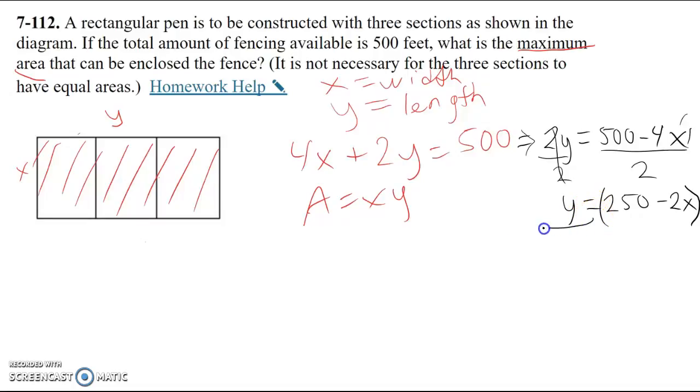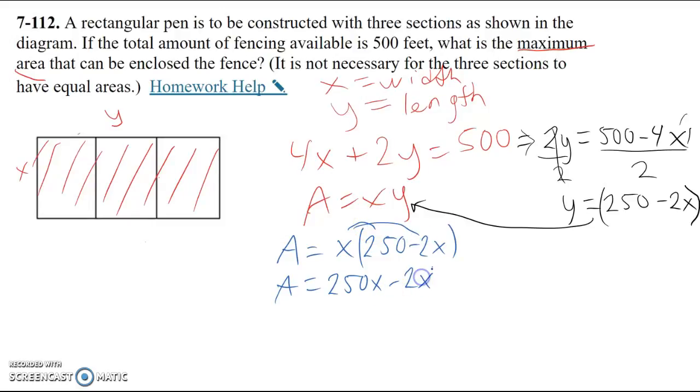So I'm going to do some substitution, replacing the y with that expression, yielding our final merged equation where the area is x times 250 minus 2x. So we have a quadratic here. I could look at it also in the format of 250x when distributed minus 2x squared.